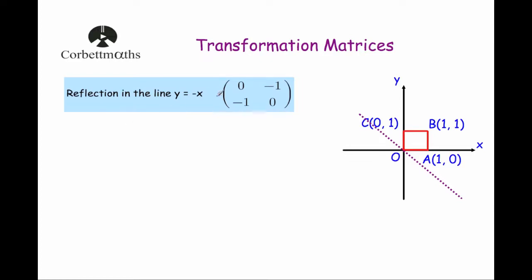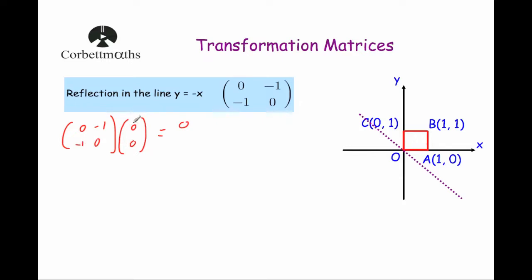We'll start by taking the transformation matrix 0, -1, -1, 0, and we'll multiply the point at O, so the point (0, 0), the origin, by that matrix. Multiplying the first row by the column: 0×0 = 0, -1×0 = 0, adding them together is 0. The second row by the column: -1×0 = 0, 0×0 = 0, adding them together is 0. So the point O will stay where it is — O' remains at the origin. It will be invariant.